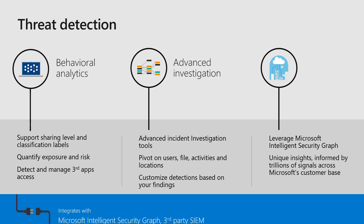The third pillar is threat detection. Once you have policies enforced and information protection policies applied, the next step is remediating against detected threats. In Cloud App Security, you can configure automatic remediation where you define policies and the actions to take against them. Those actions can be applied based on your configurations — for example, if a user is trying to access data from a risky location, you can suspend their account or enforce them to re-sign into Office 365, or trigger alerts and suspend the user account for a certain period of time.